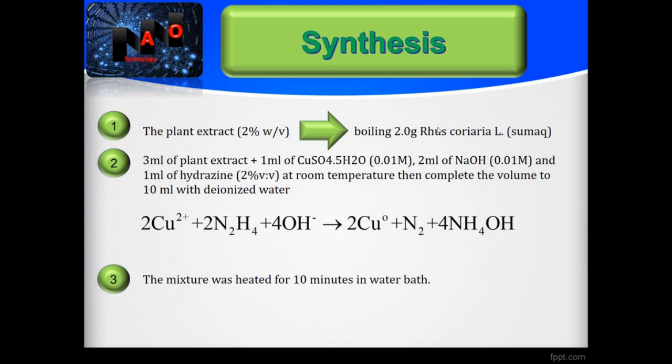The next step is synthesis of nanoparticles using sumac extract. To synthesize nanoparticles using sumac as stabilizer, 3 milliliter of plant extract were added to 1 milliliter of copper sulfate pentahydrate with the concentration of 0.01 molar.